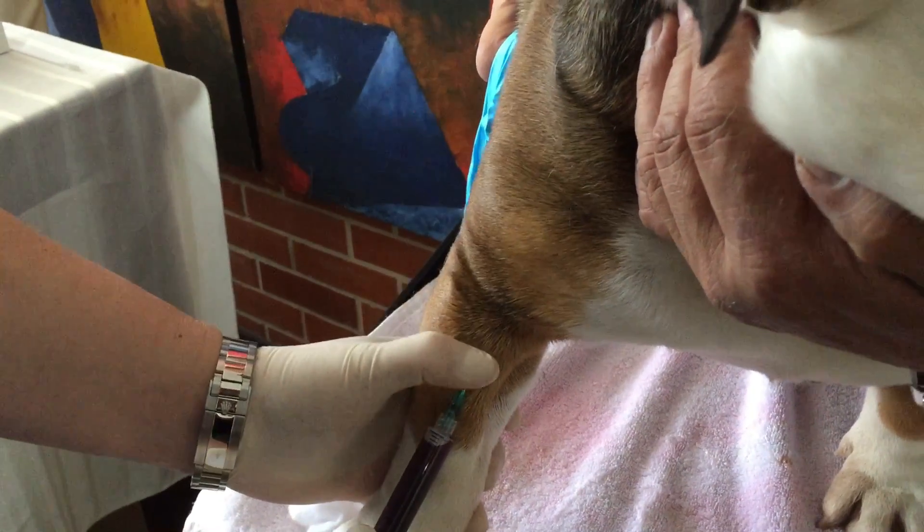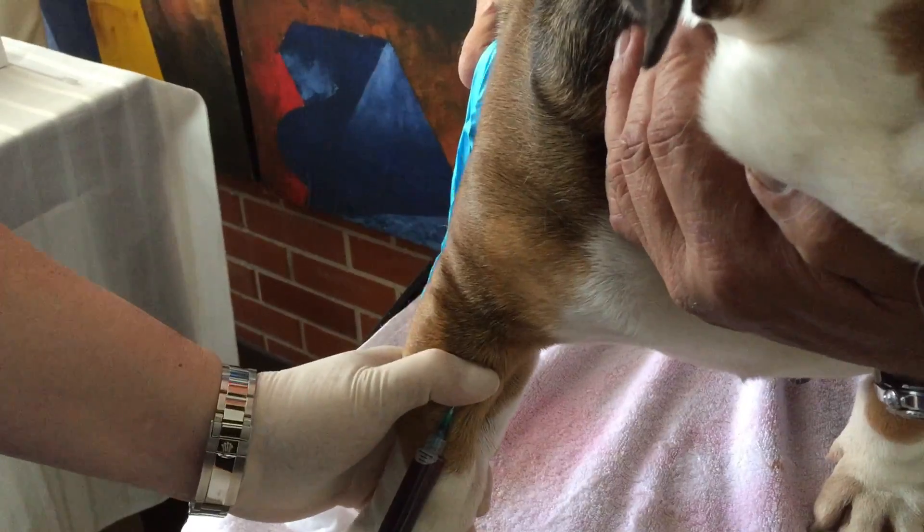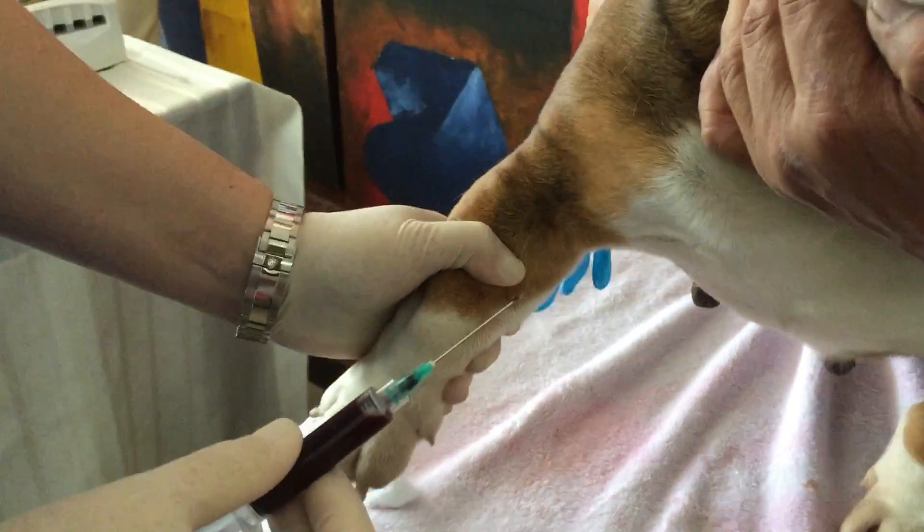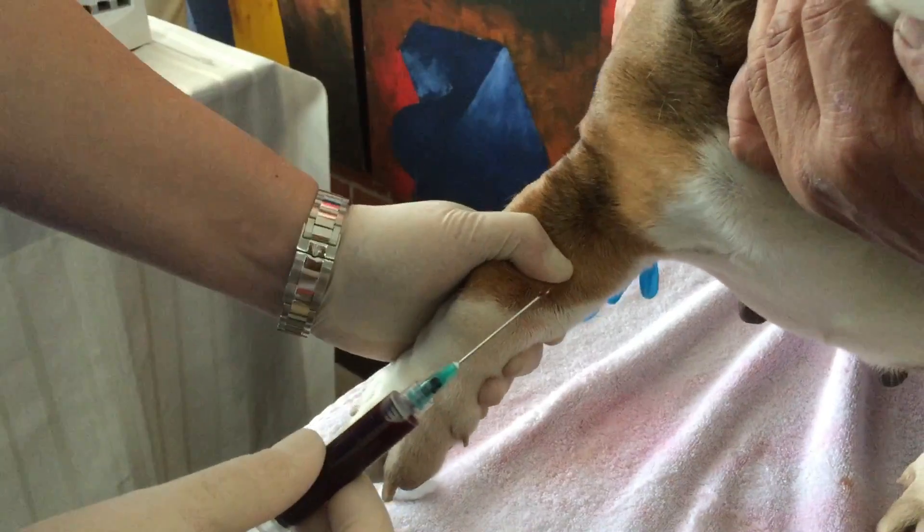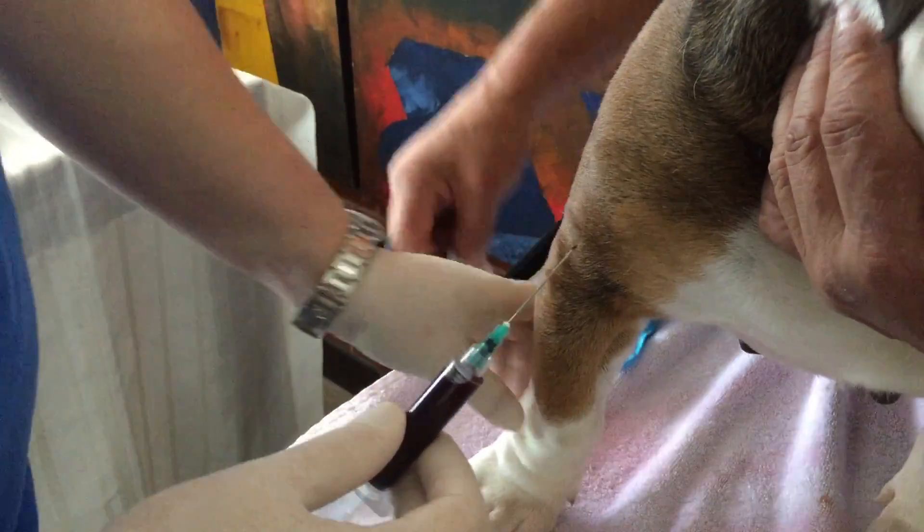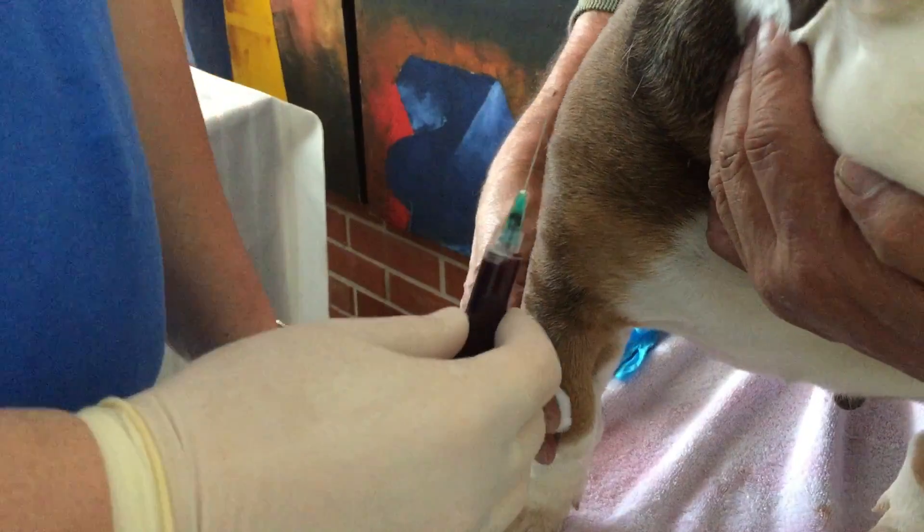You don't want to push it hard. You just leave it there and pull the needle backwards. Then you press here so no blood comes out. And that's it. Let's go spin this blood.